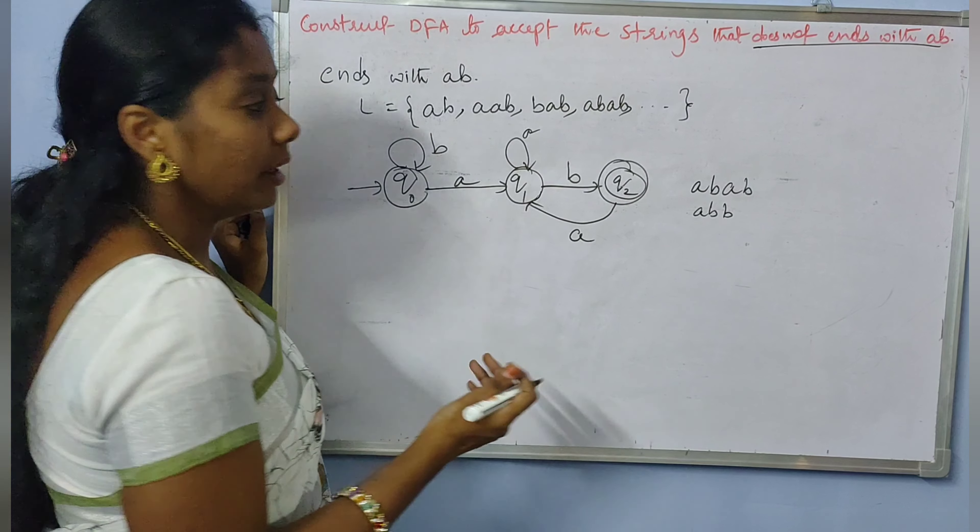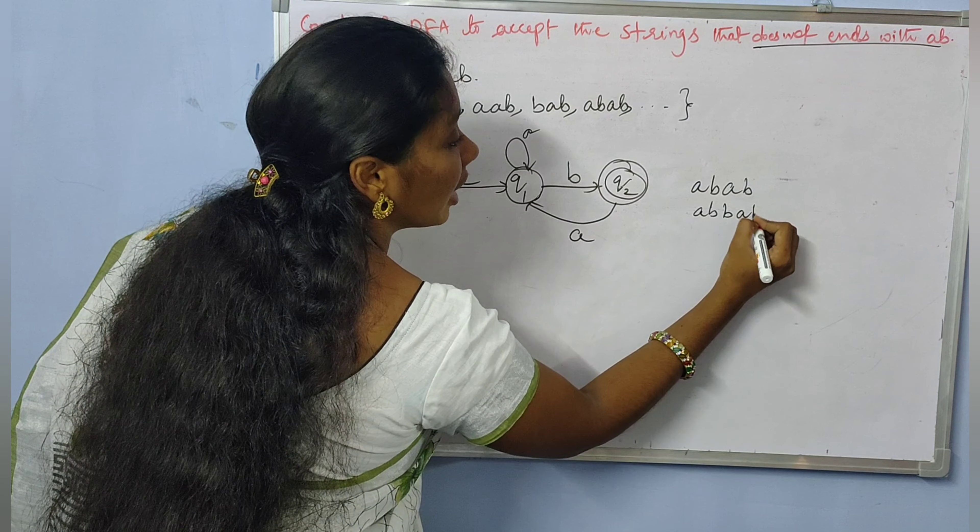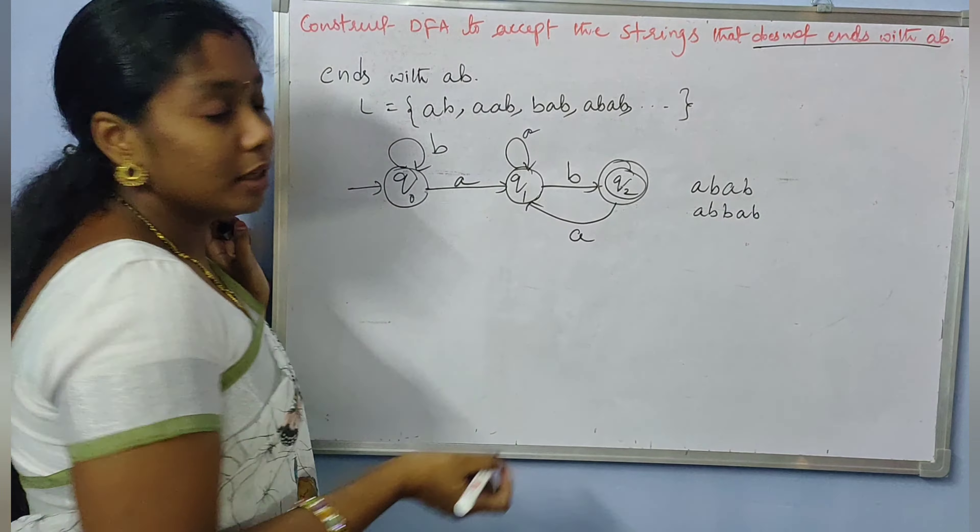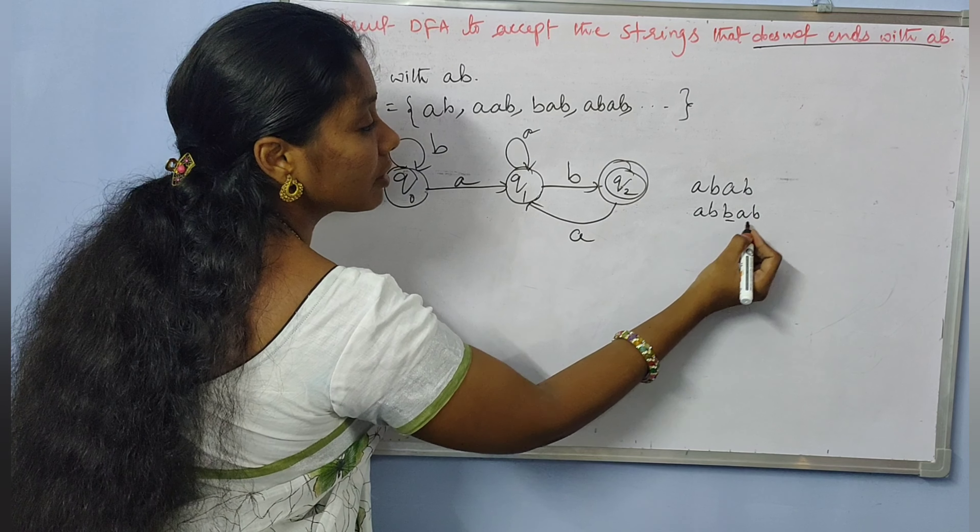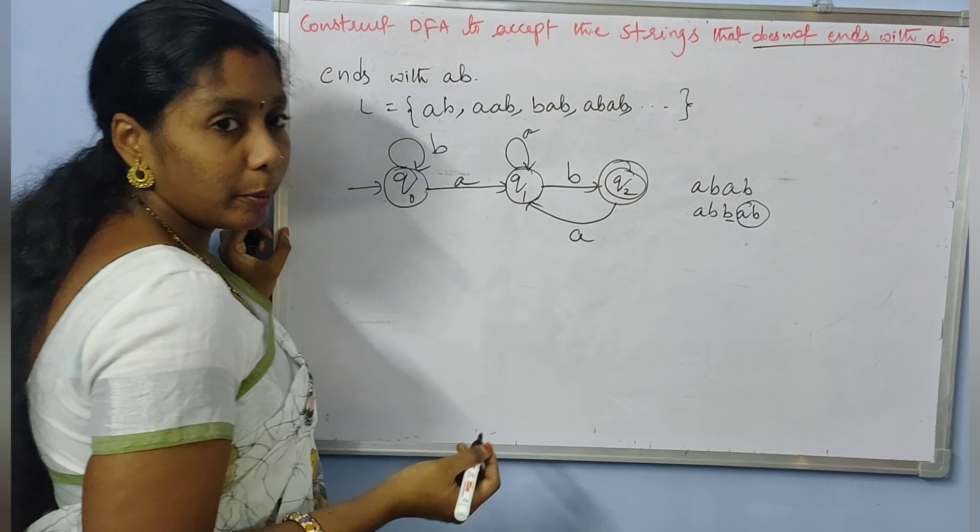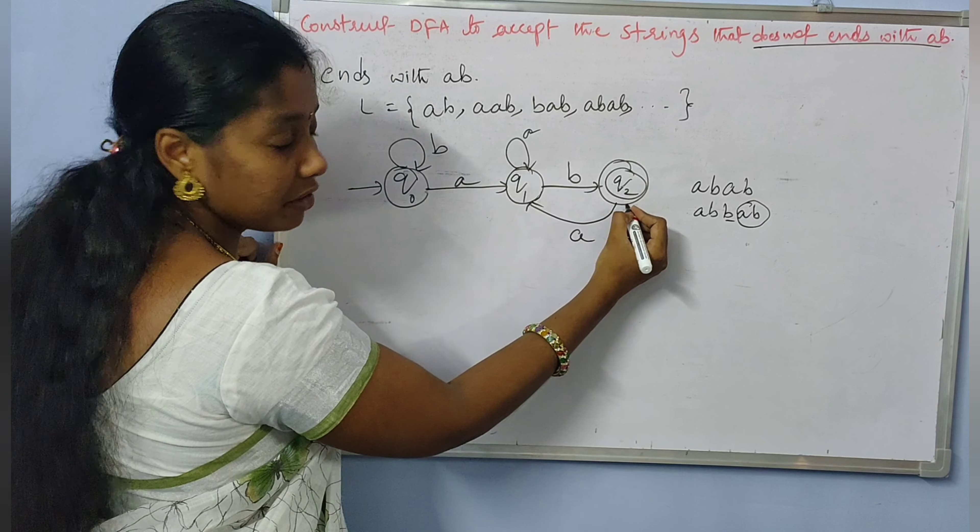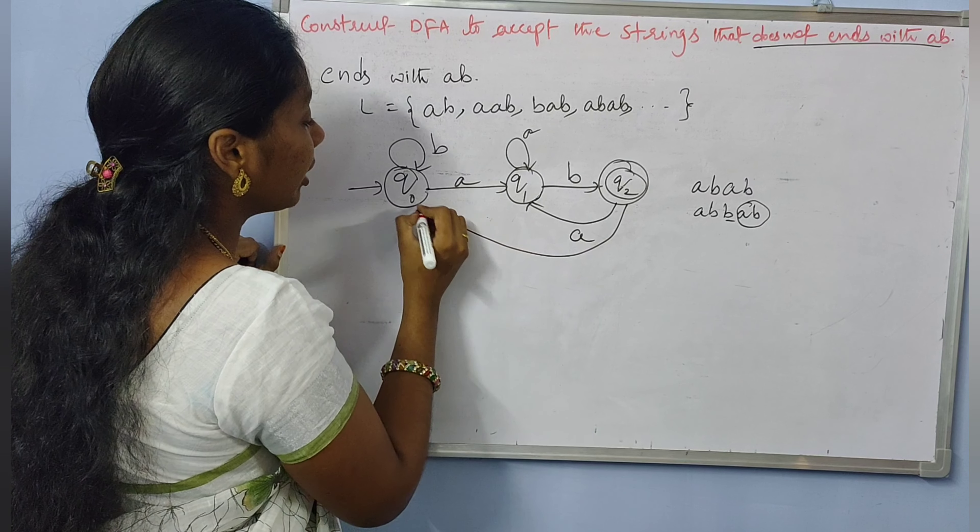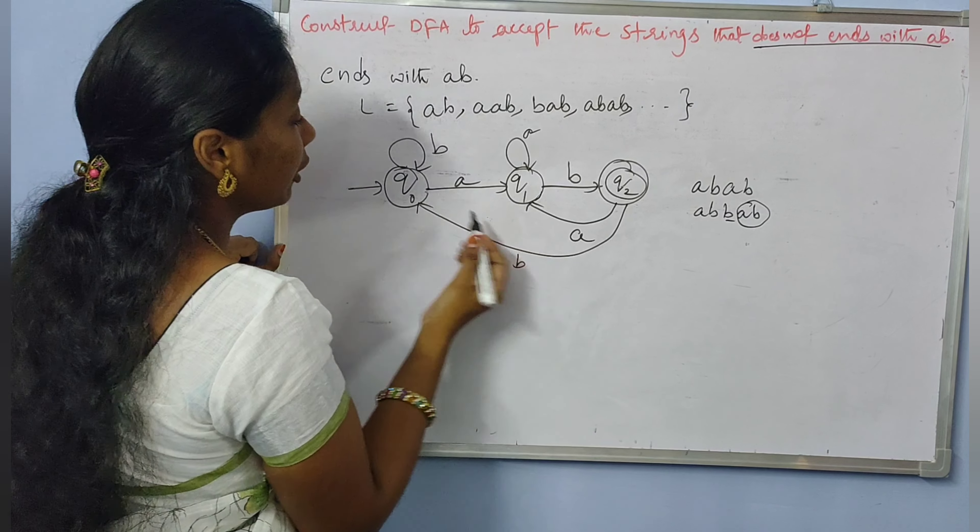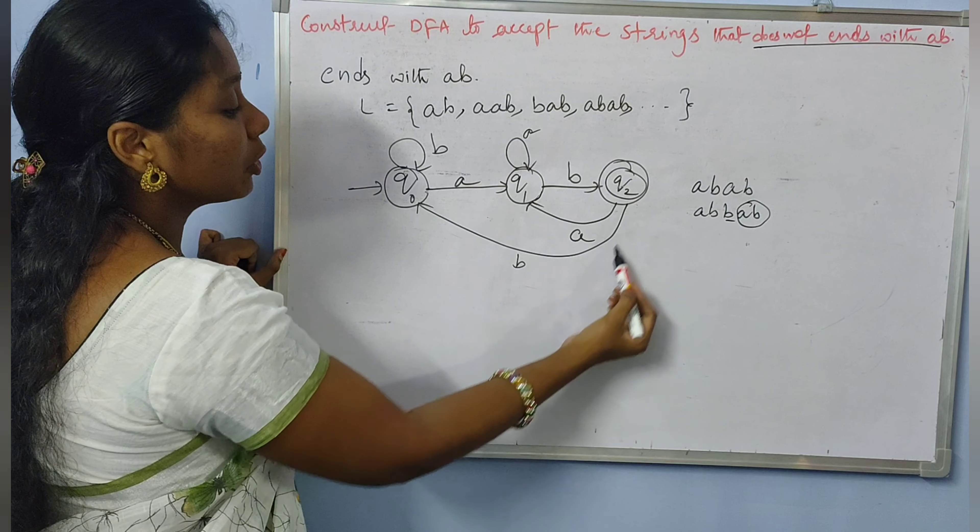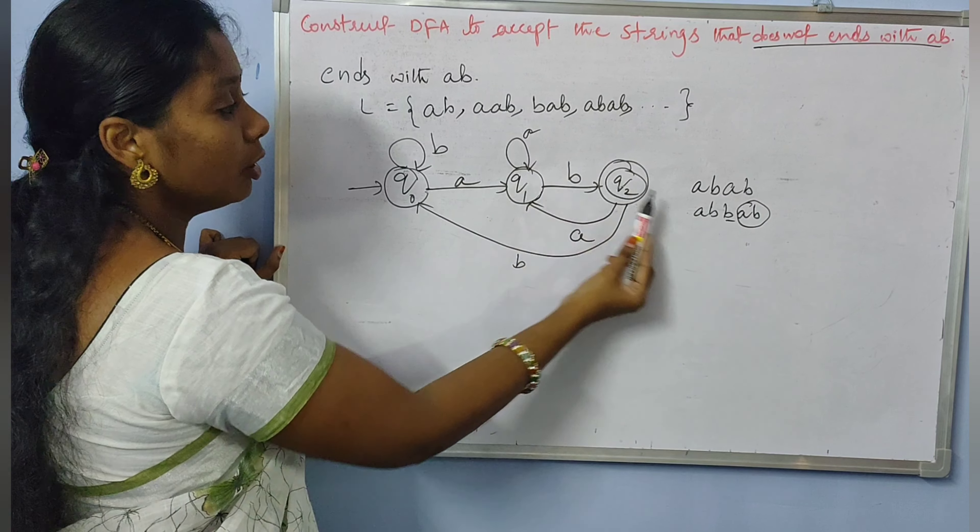To fulfill our requirement, it needs another A and B. From Q2, if we have a transition with B, it needs another AB, so B goes back to Q0.